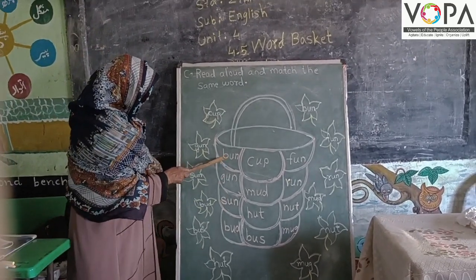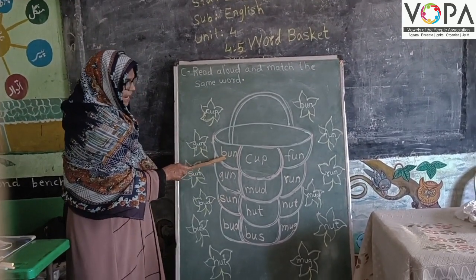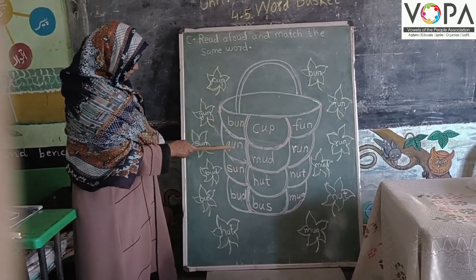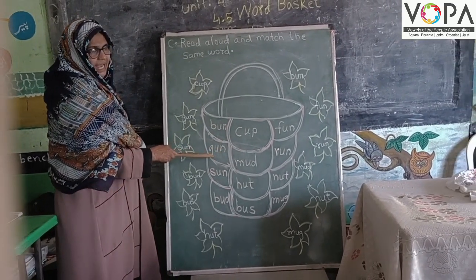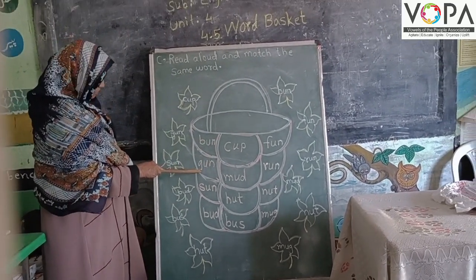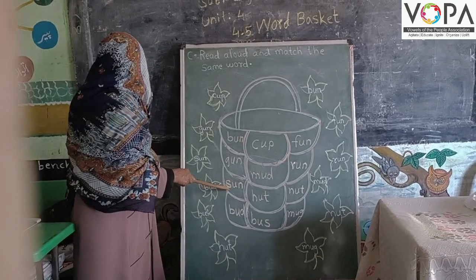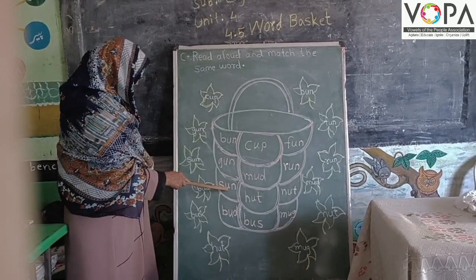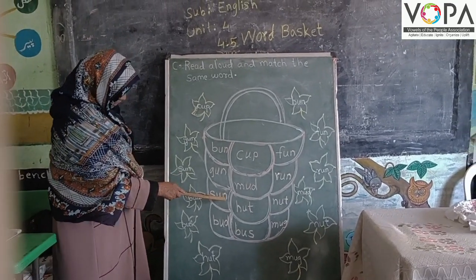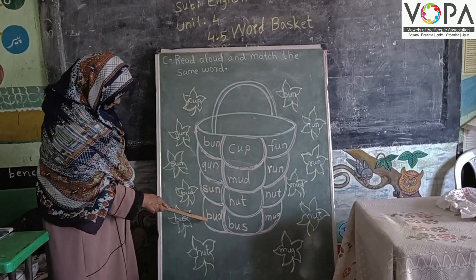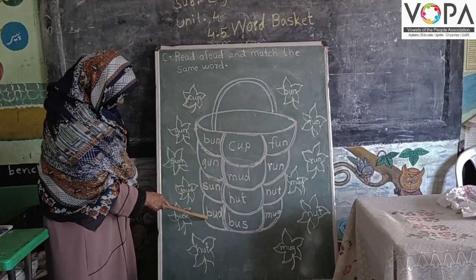B, U, N — Bun. G, U, N — Gun. S, U, N — Sun.